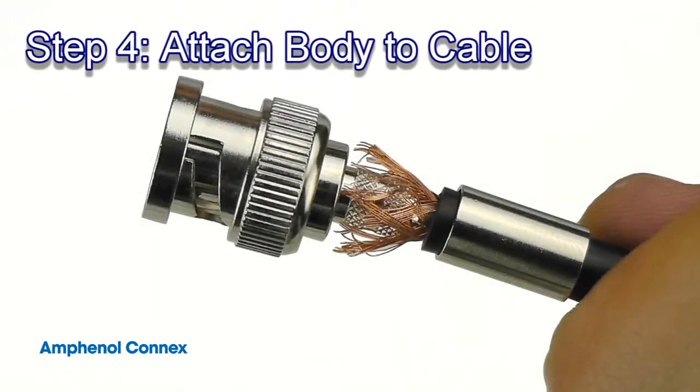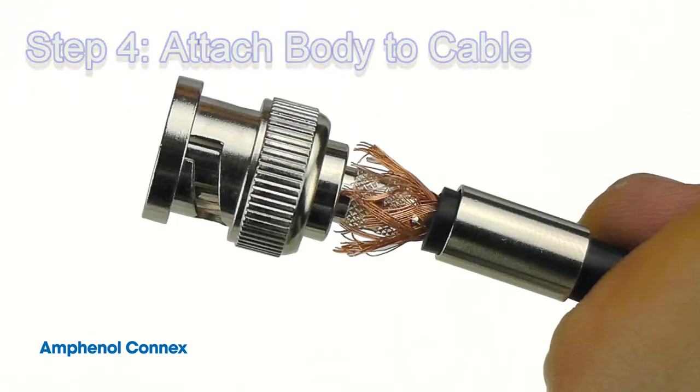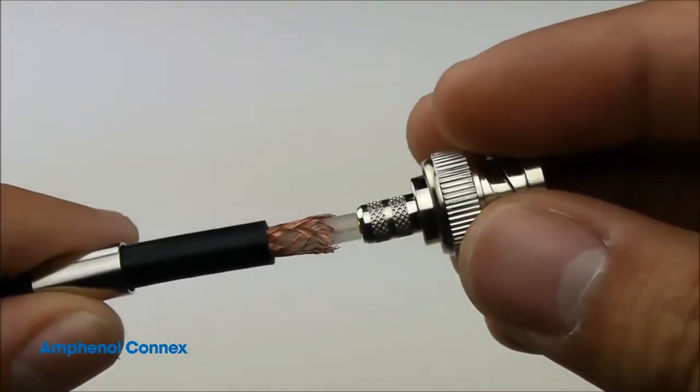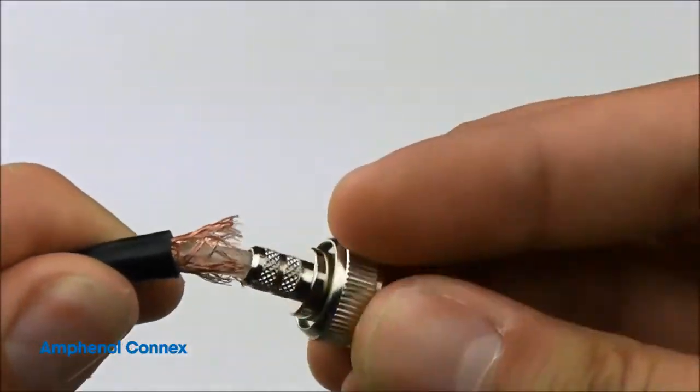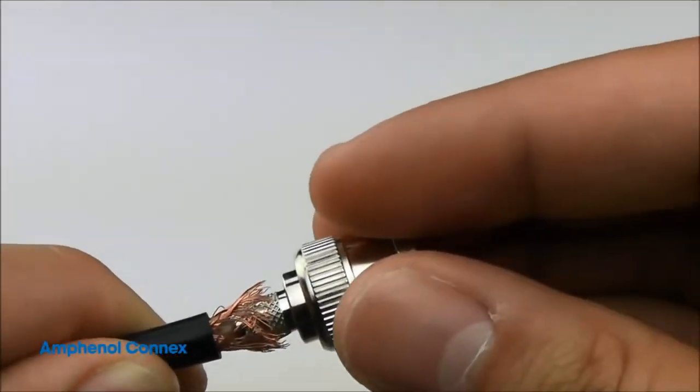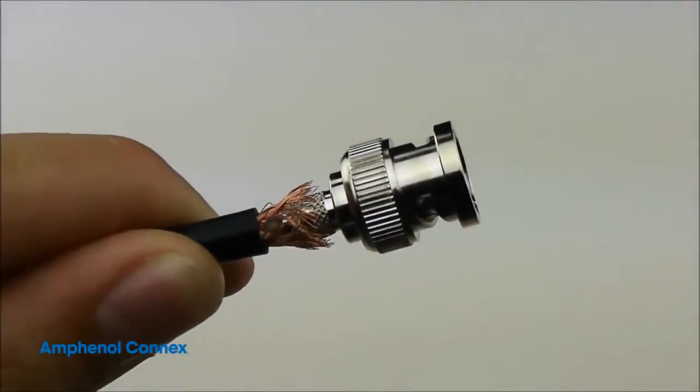Step 4. Attach the connector body to the cable. To do this, begin by partially inserting the cable into the connector body and use the body to push against the insulator of the cable and spread out the braid enough to fully insert the cable into the connector without trapping any of the braid.